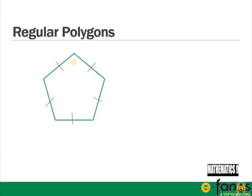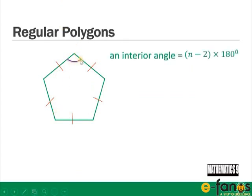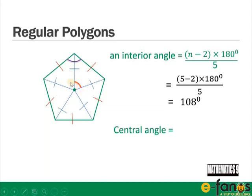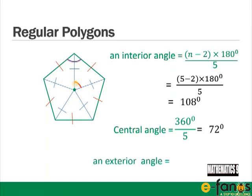For a regular pentagon, each interior angle equals (n − 2) × 180 / n = (5 − 2) × 180 / 5 = 108 degrees. Joining the center to each vertex creates central angles; each central angle is 360 / 5 = 72 degrees. Since exterior angles sum to 360, each exterior angle is also 360 / 5 = 72 degrees.